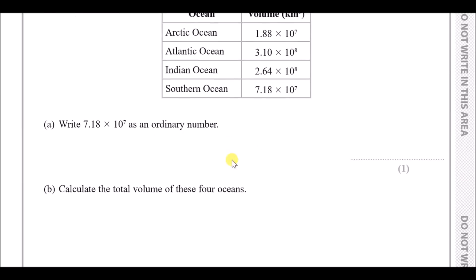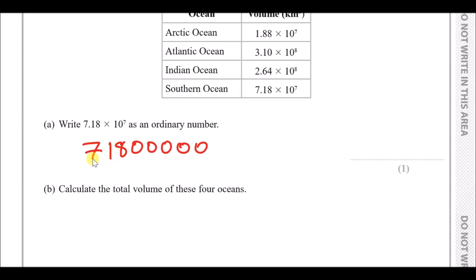Part a: write 7.18 × 10⁷ as an ordinary number. When it comes to standard form, you just look at the power. Power 7 means there are seven digits after the first digit. So we start with 7, copy the 18 — that's already two digits — meaning we need five more zeros. Adding commas in the right place, the answer reads 71,800,000.